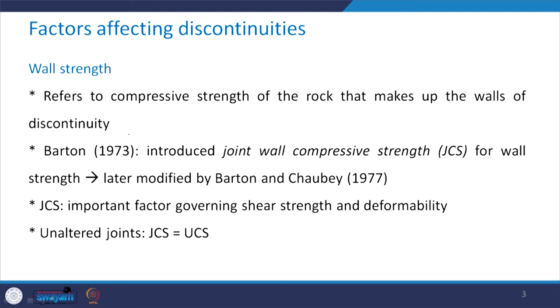First in that series is wall strength, very, very important in case if you have unfilled joints. The wall strength refers to the compressive strength of the rock that makes up the wall of the discontinuity. Barton in 1973 introduced a term called joint wall compressive strength to define the wall strength, and this term was later modified by him and his co-authors in 1977. This joint wall compressive strength, which in short is called JCS, is a very important factor governing the shear strength as well as the deformability of the jointed rock.